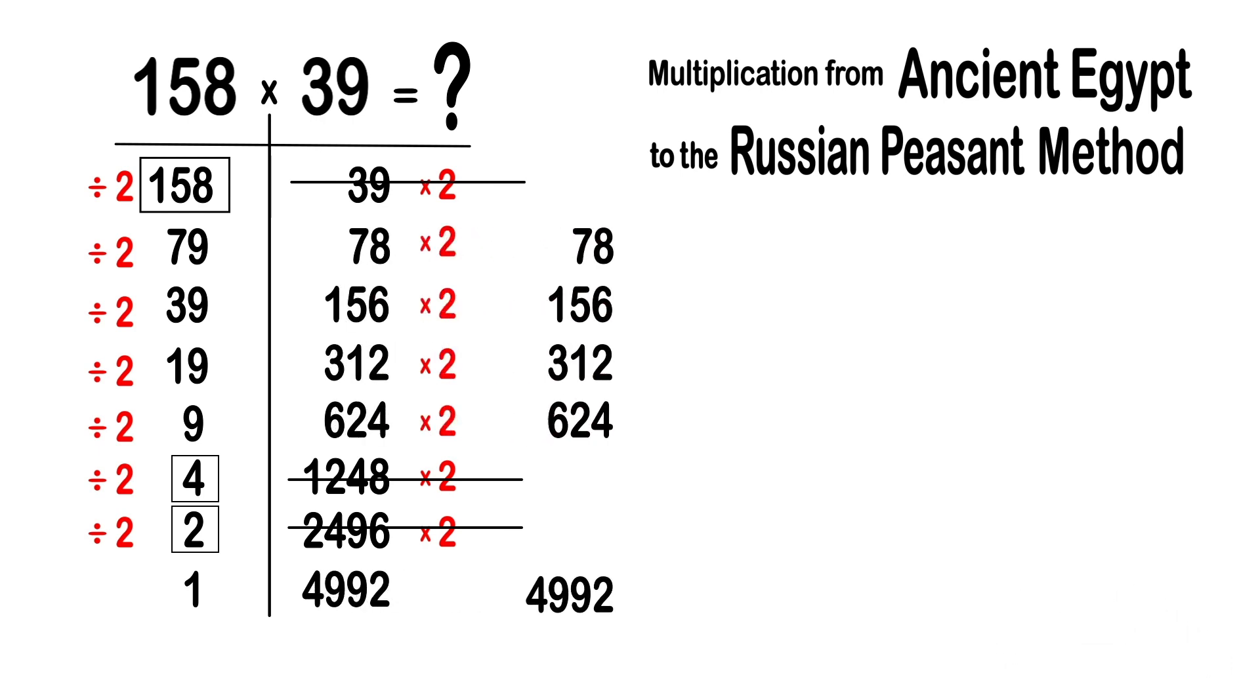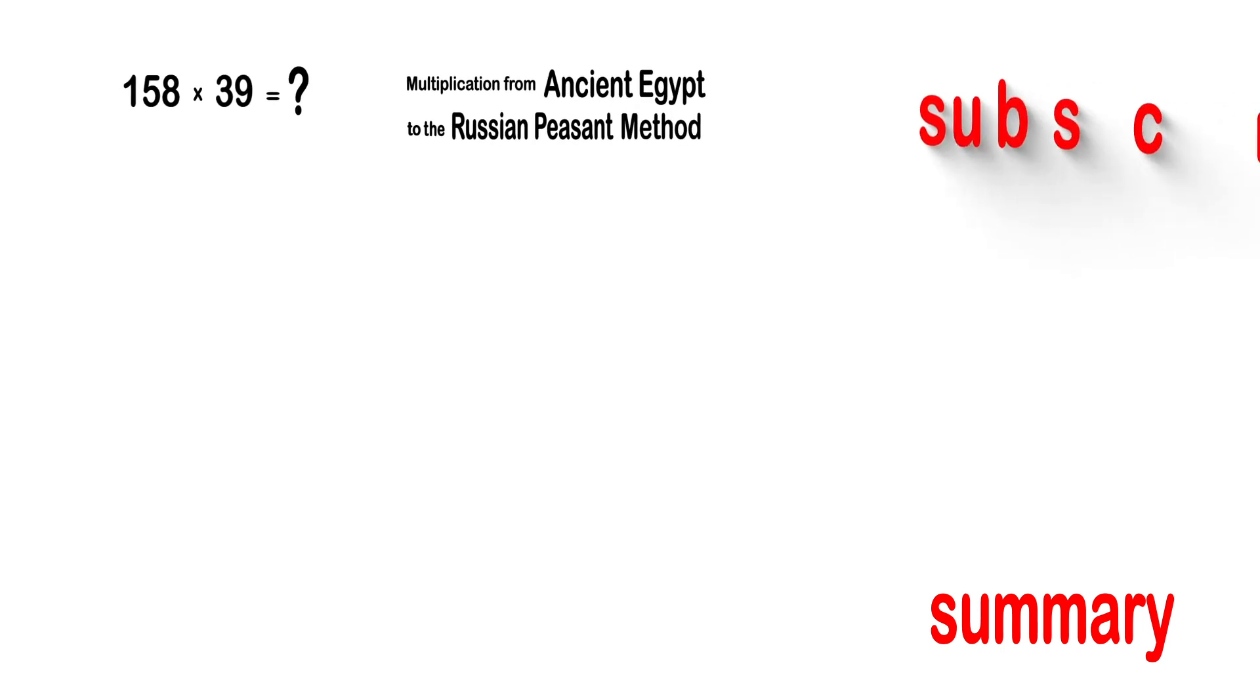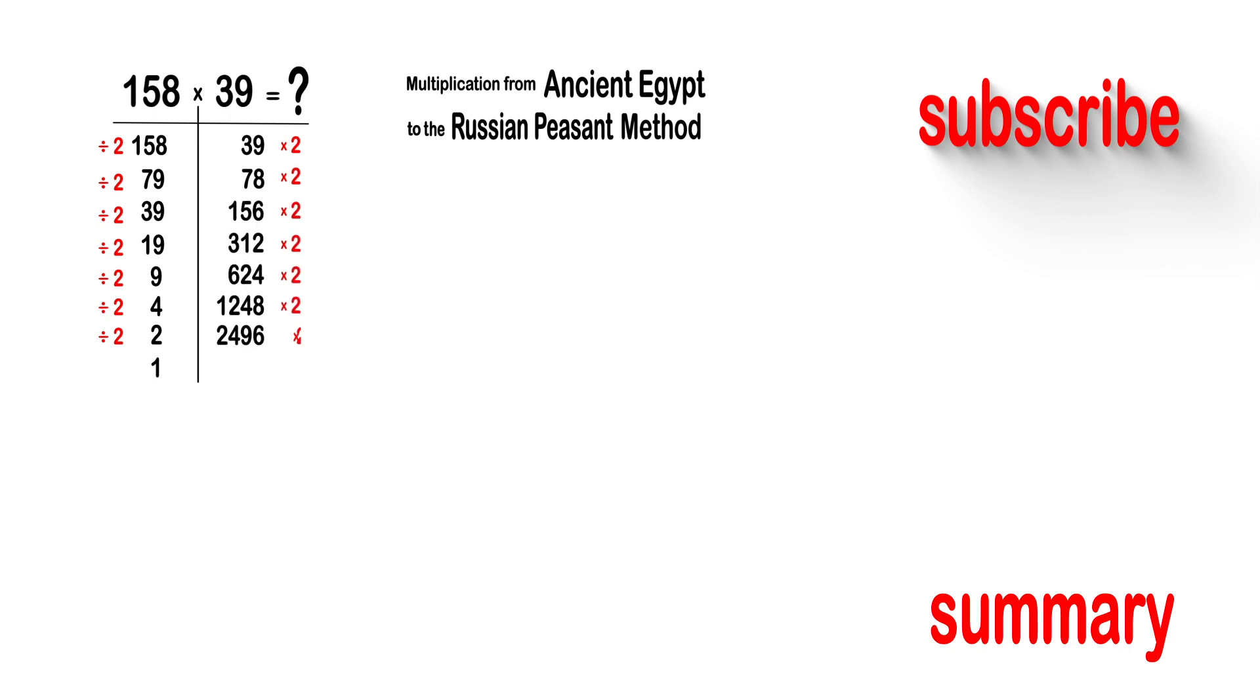As seen, the product is given by adding the remaining numbers in the second column.